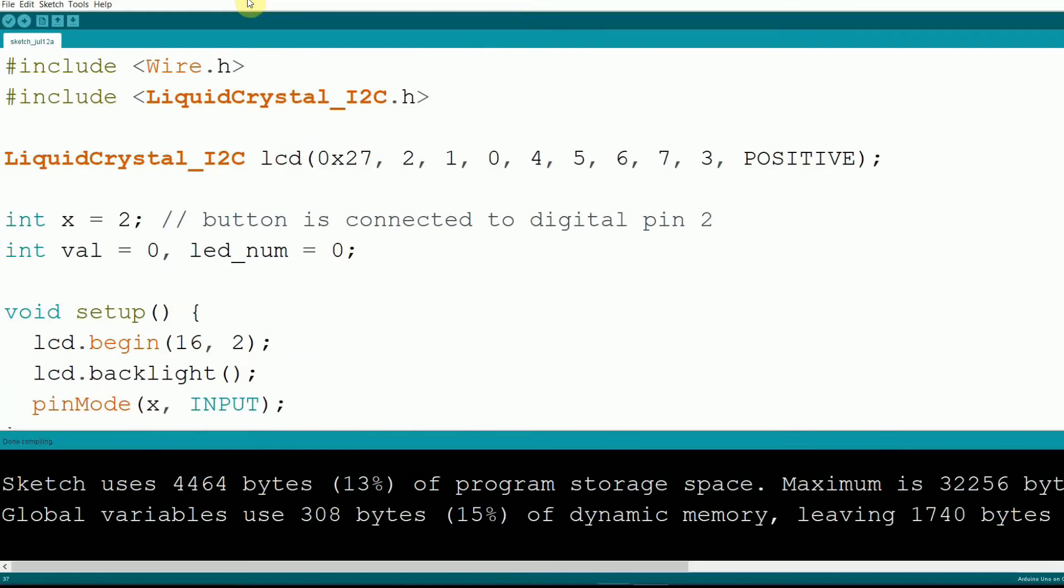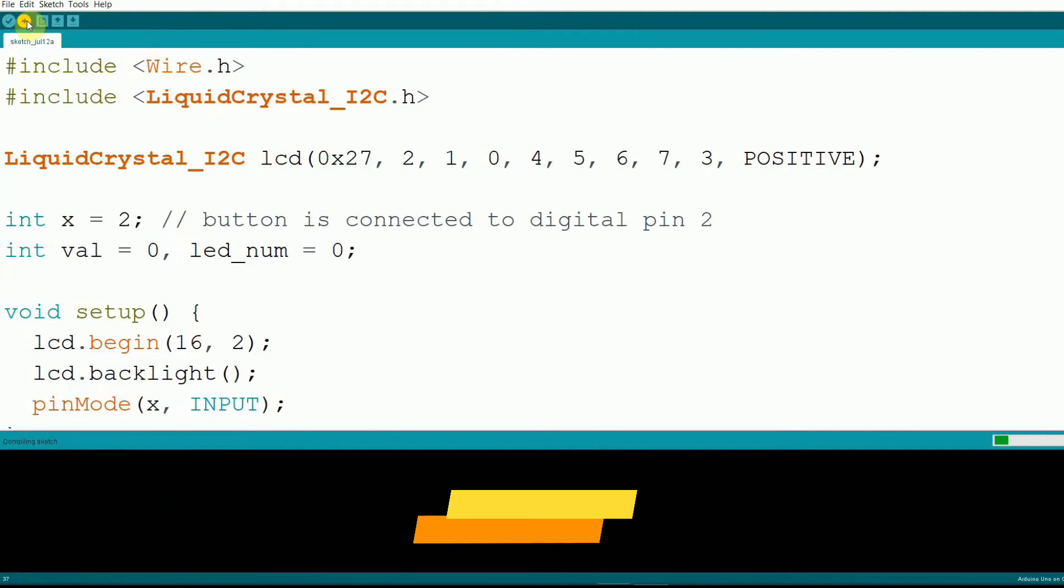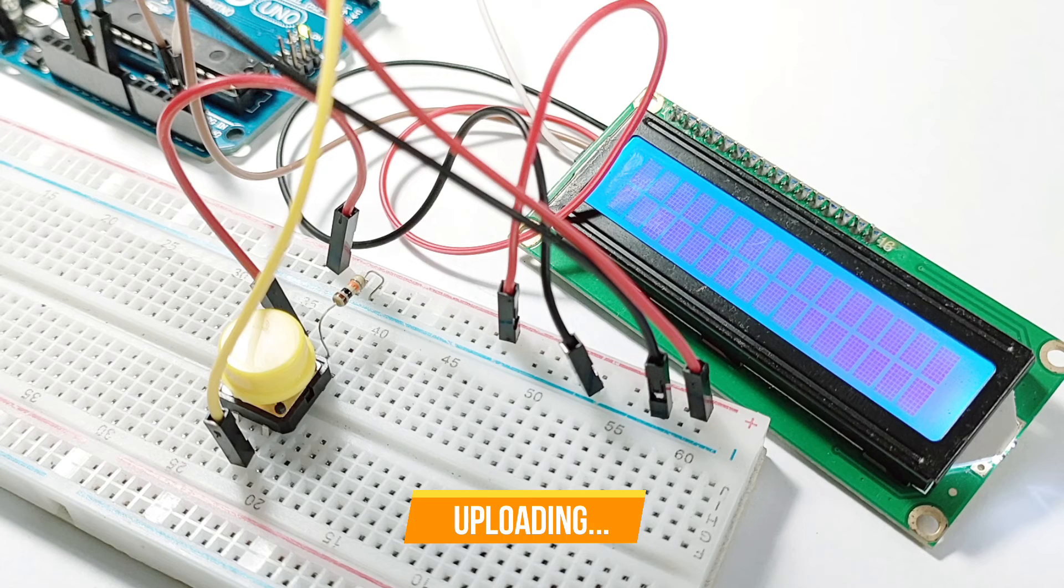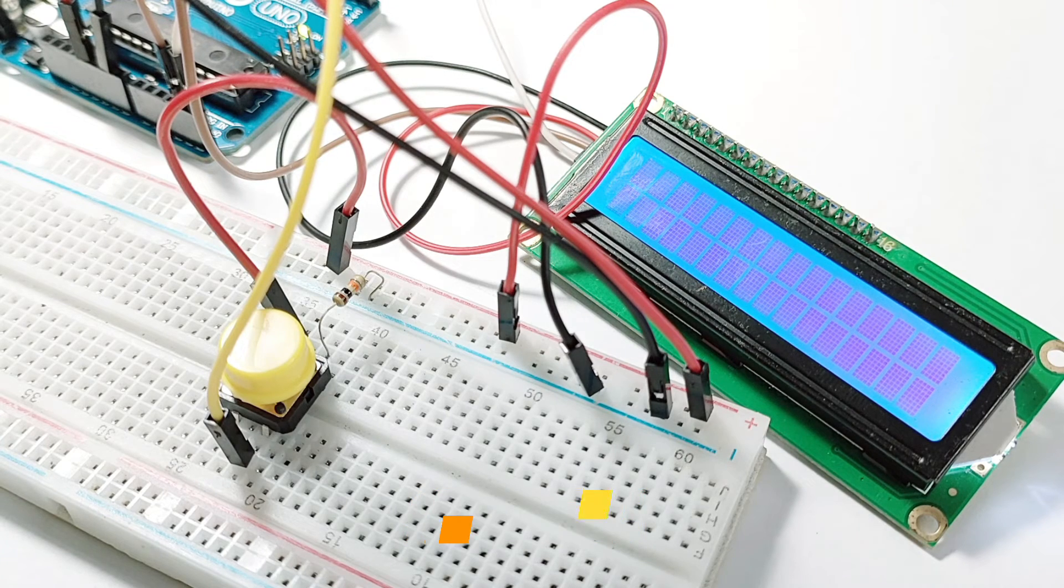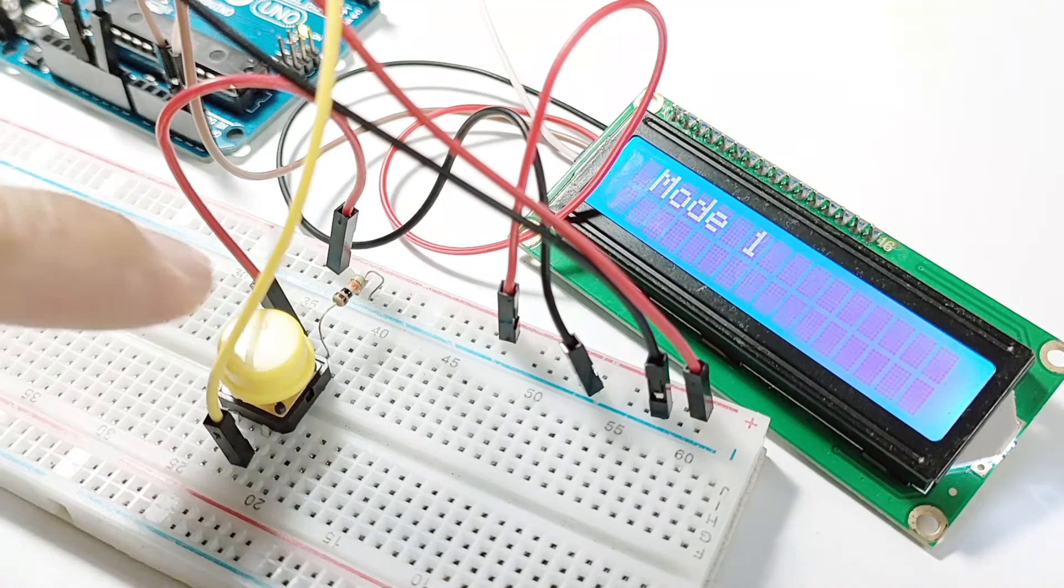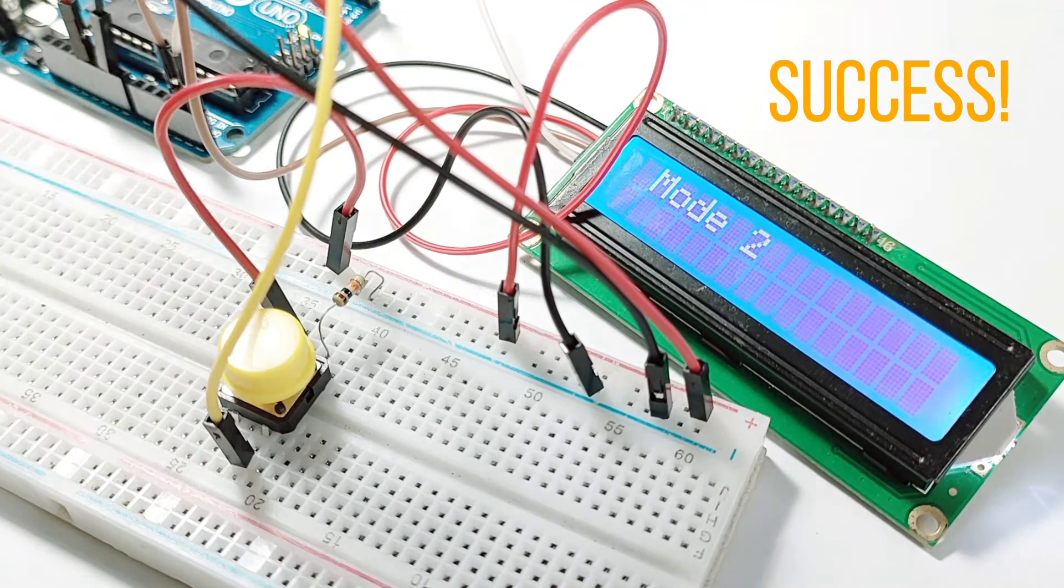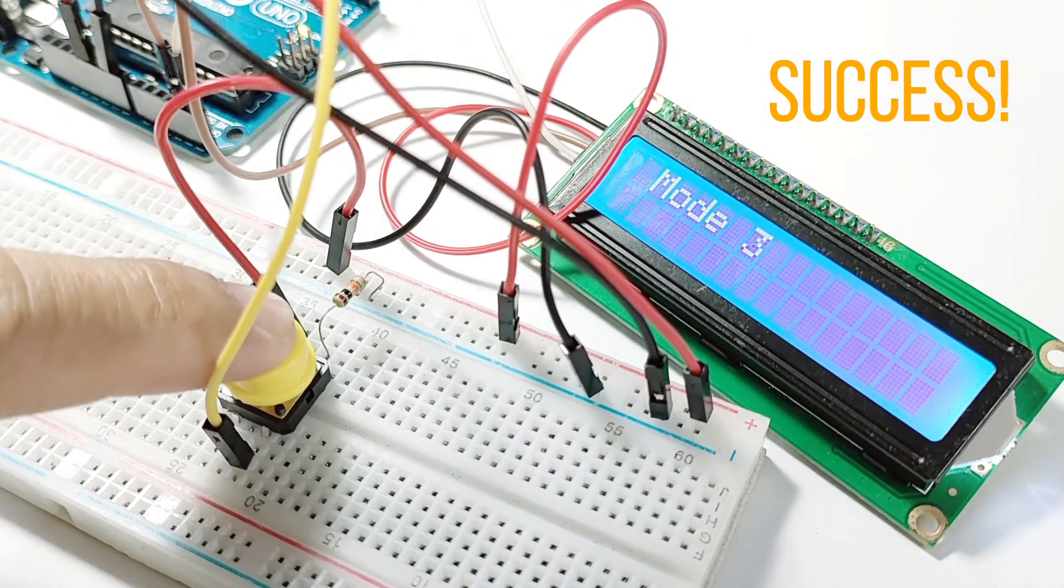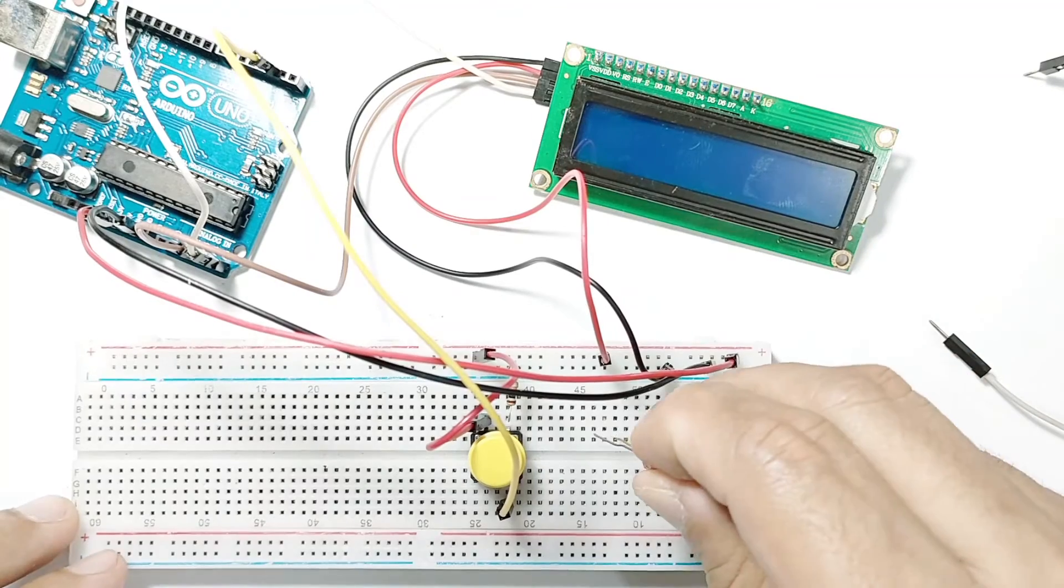Now let's upload the code to the Arduino and see it in action. Now let's see how we can use this menu system in a practical application. Imagine we're creating a simple lighting control system with different modes.